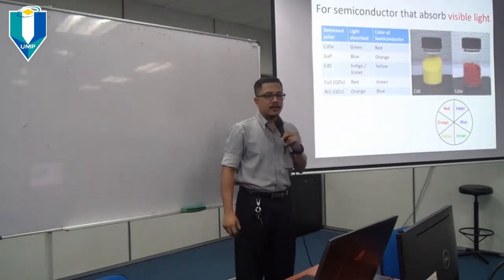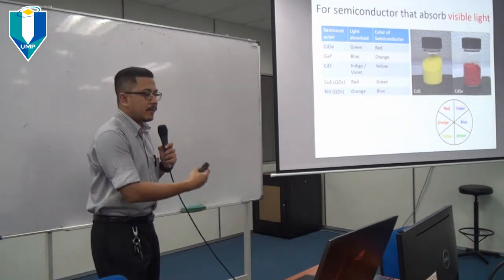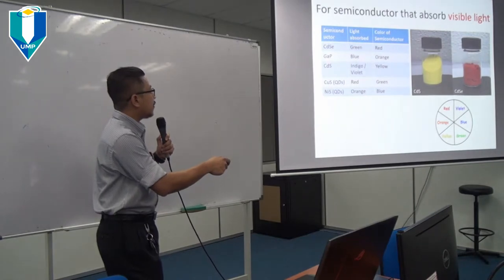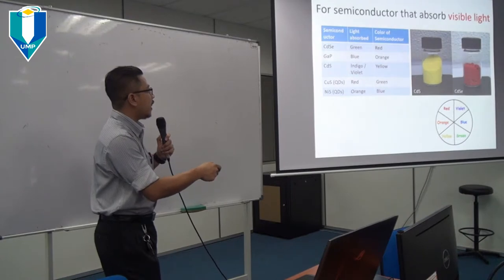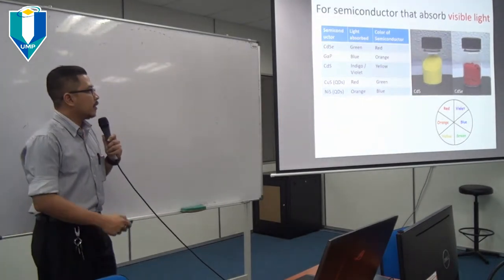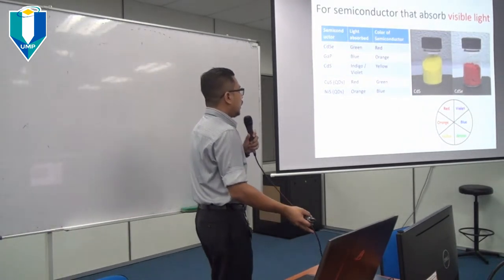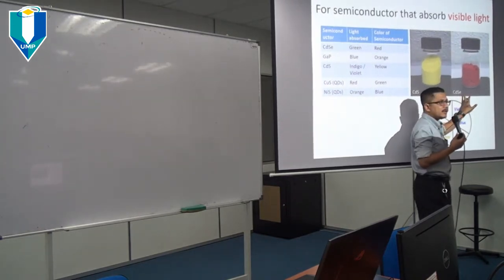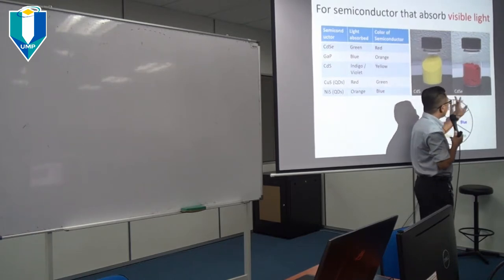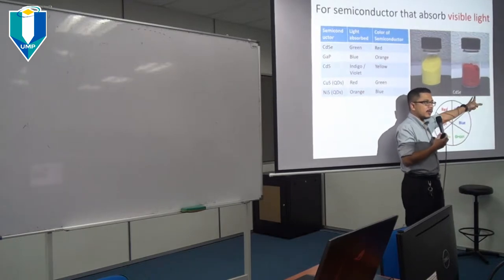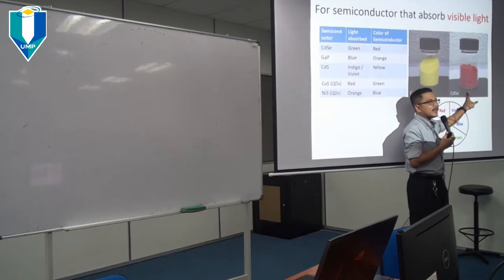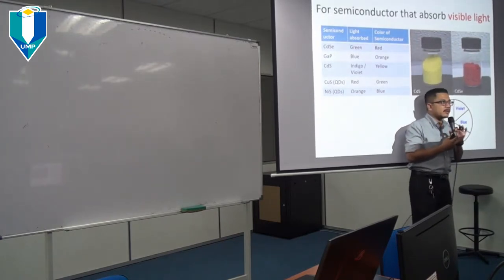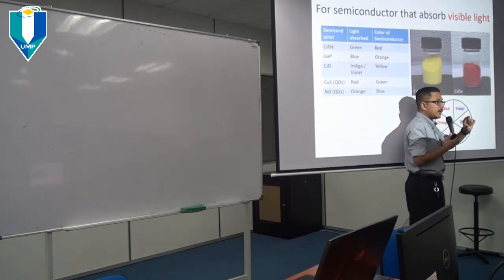Examples of materials: cadmium selenide absorbs green light and its colour is red. Gallium phosphide absorbs blue light, so the colour will be orange. Similarly CdS, CuS, and nitrosulfide follow the wheel of colour. Some of you have done experiments in the advanced material laboratory using UV-Vis scan on CdS. When we manipulate the size of the semiconductor material, the band gap changes; when the band gap changes, the colour also changes — this is discussed in chapter 5 on quantum dots.